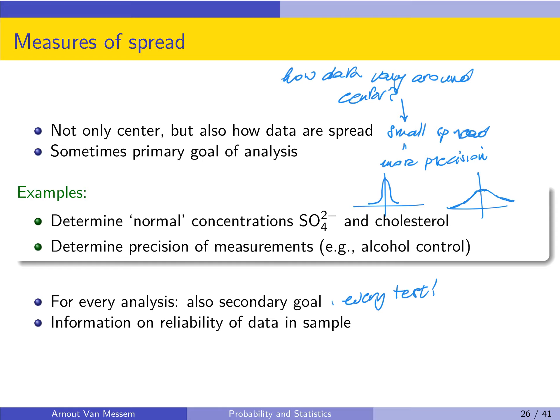For example, if we want to determine the normal concentrations of sulfuric acid or cholesterol, we want to find the center of the distribution — which is the most common, most likely value to find — but we also want to know that the spread is small so that we have a very accurate estimate of this concentration. In this case it is a secondary objective: the first objective is to know the center, the secondary objective is to know that the precision is strong so that the spread of the data is small.